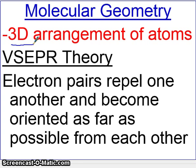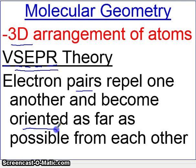What's going to drive this is something called the VSEPR theory, pronounced VSEPR. The acronym means Valence Shell Electron Pair Repulsion. Essentially, what it says is that the electron pairs around the atom or around the molecule will repel each other and become oriented as far as possible from each other — electrons don't like to be near each other, so they will try to go to opposite sides of the molecule. This will determine the three-dimensional arrangement of the molecule.